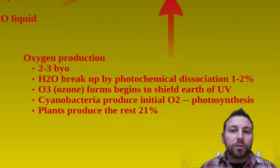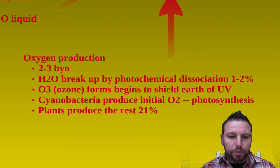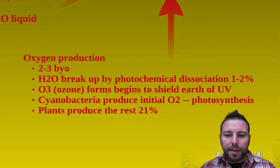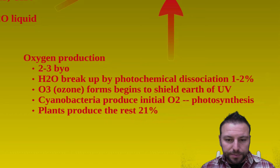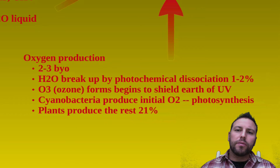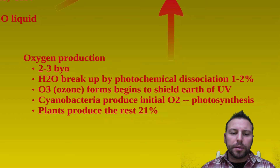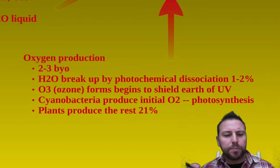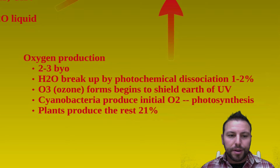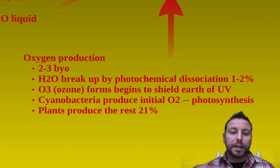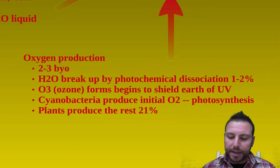We also see the development and evolution of cyanobacteria — that blue-green algae that started pumping out oxygen into the atmosphere through photosynthesis. As time goes on and evolution starts pushing forward with new organisms, we get plants producing about another 21% of the oxygen present in our atmosphere. But it took a long time — a couple of billion years — for it to really take hold and get something resembling what we have now.